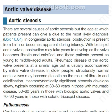Rheumatic disease of the aortic valve presents at a similar age but is usually accompanied by mitral valve disease. In older people, structurally normal aortic valves may become stenotic as the result of fibrosis and calcification. Hemodynamically significant stenosis develops slowly, typically occurring at 30–60 years in those with rheumatic disease, 50–60 years in those with bicuspid aortic valves, and 70–90 years in those with calcific tricuspid disease.